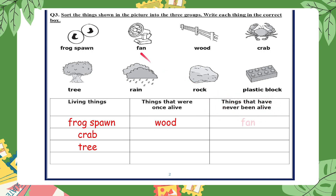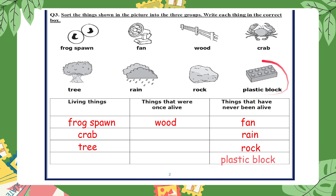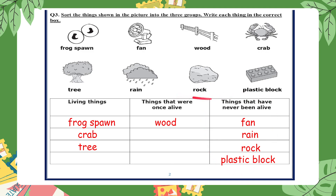Things that have never been alive: fan, rain, rock, and plastic block. You can use the seven rules to check. The rock fails most of the rules — rocks can move, for example in an earthquake, but not by themselves. Rocks can appear to grow, but this is only when more rock pushes them, as in an earthquake.